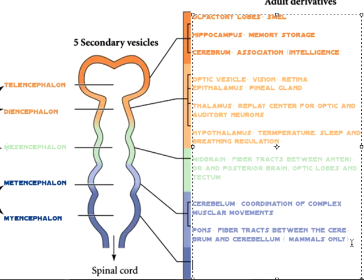The last is the myencephalon, which consists of the medulla oblongata - a reflex center for involuntary activities. And that concludes it.